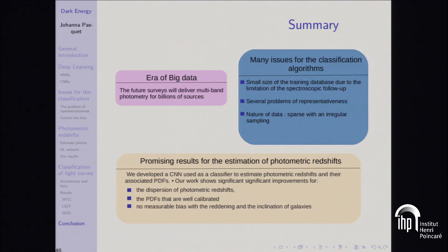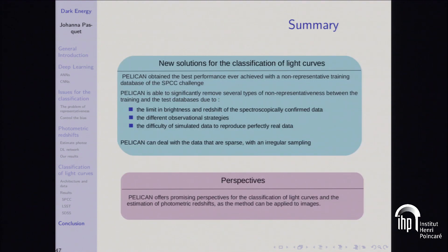In conclusion, we are in the era of big data and we have to prepare future surveys with automatic tools. These algorithms must address the different problems of representativeness as they represent a realistic scenario we will have to consider. The CNN shows very good performance for photometric redshift estimation, and PELICAN is able to deal with the problem of representativeness for light curve classification. The next step is to adapt the photometric redshift algorithm like PELICAN to also deal with representativeness problems, and to analyze different biases introduced by these methods on cosmological parameters.